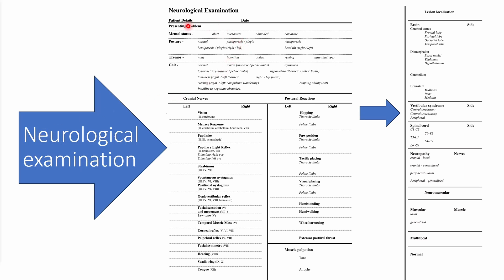On the checklist we have things like mental status, posture and gait, which we usually start with. We then go to the cranial nerves — this is the list of all the tests you can do — and then we do our postural reactions. We can also do spinal reflexes, but these are used to localize a problem to the spinal cord or neuromuscular system and aren't necessary in this particular case.